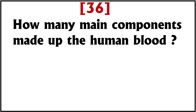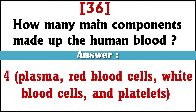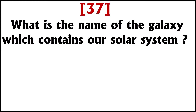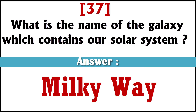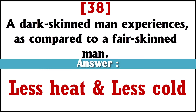How many main components make up human blood? Answer: Plasma, red blood cells, white blood cells, and platelets. What is the name of the galaxy which contains our solar system? Answer: Milky Way. A dark-skinned man experiences, compared to a fair-skinned man? Answer: Less heat and less cold.